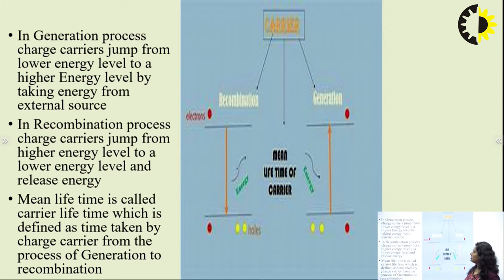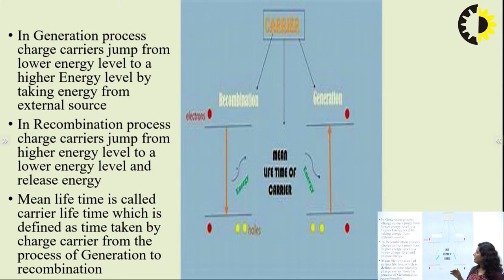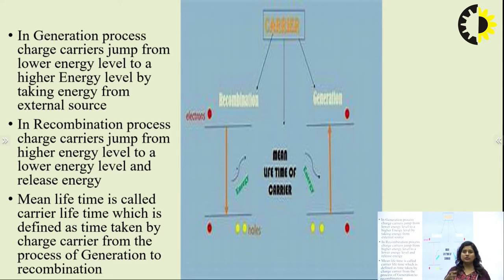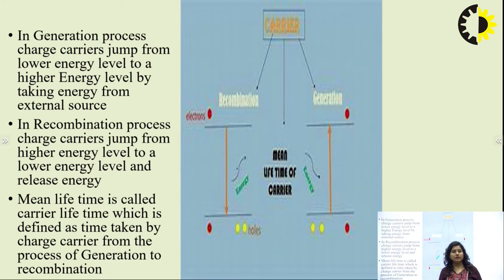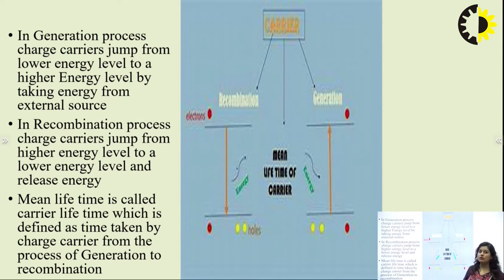Mean lifetime is called the carrier lifetime. Somewhere in between the conduction band and the valence band — or in terms of energy levels between lower and higher energy levels — we have a meta stable state. Mean lifetime is defined as the time taken by the carrier to stay in the conduction band or higher energy level, or the time taken by charge carriers from the process of generation to recombination. Sometimes there are meta stable states in three-level or four-level laser systems.